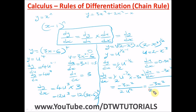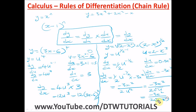Any expression raised to the power of one half is the square root, so u^(1/2) = √u. Substituting u = 2 − x³ back in, our final answer is: dy/dx = −3x² / (2√(2 − x³)).